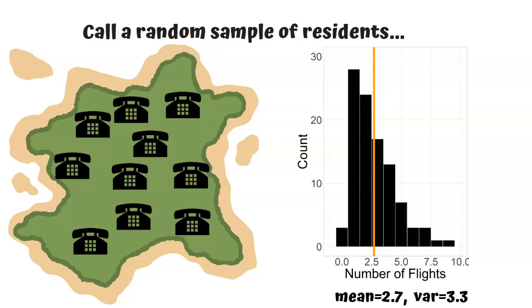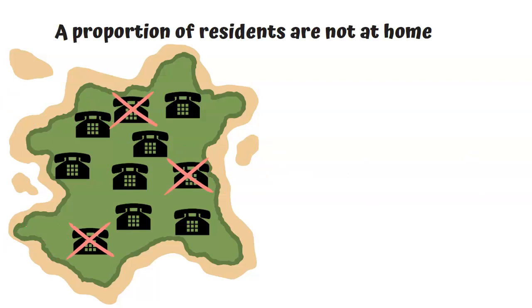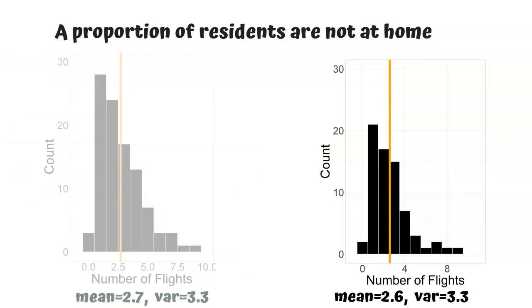Now, in reality, it's very likely that not everyone will respond to the survey. Let's explore two different scenarios where this might happen. In the first scenario, about a third of the people just aren't at home when you call them, and it's a random selection of the people that you call who don't pick up the phone. So based on the people who do respond, your distribution looks like this. The mean is 2.6 and the variance is 3.3. Let's compare this to how the distribution looks if everyone had responded. You can see that the shape of the distribution still looks quite similar even though the sample size has much reduced, and the mean and the variance are not affected too much.